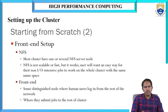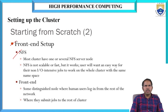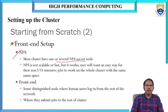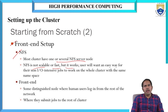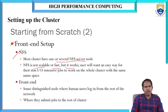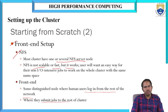First, we have to go for a front-end setup. For that purpose, we have to use NFS — Network File Services. Most clusters have one or several NFS server nodes. But NFS is not scalable or fast, but it works. The requirement of the front-end system is some distribution mode where users log in from the rest of the network. The other task of the front-end system is to submit jobs to the rest of the clusters. That is the main role of login and submitting jobs to the rest of the clusters.